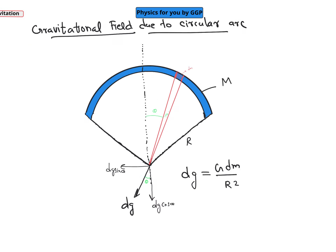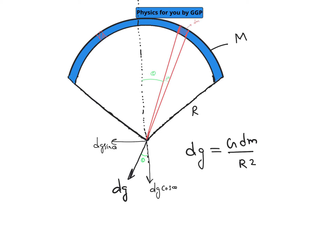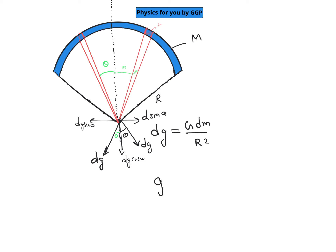Now considering a symmetric element on the other side of the bisector, that element also produces its own gravitational field dg in its corresponding direction, also making angle θ. Resolving it gives components dg·cos θ and dg·sin θ. The sin θ components from both sides cancel each other, so the net gravitational field comes from integrating all the dg·cos θ components.